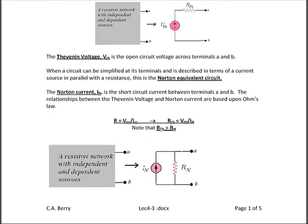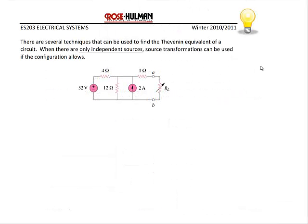The relationship between the Thévenin and Norton equivalent circuits is source transformations. R_Thévenin and R_Norton are the same, and V_Thévenin is related to I_Norton by Ohm's law. To find V_Thévenin, we find the open circuit voltage between terminals A and B, so V_Thévenin equals V_oc. To find I_Norton, we find the short circuit current between terminals A and B, so I_Norton equals I_sc.